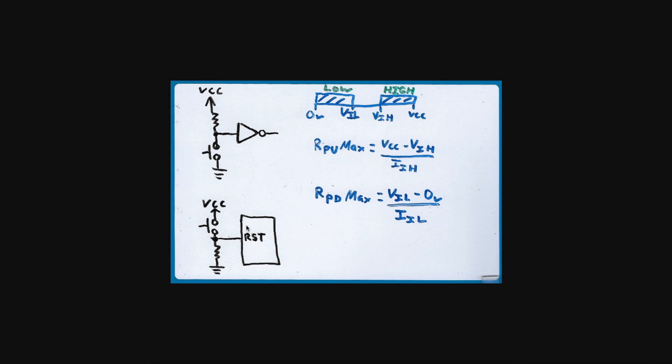So since you need a logic high to reset the chip, you need a pull-down to keep the chip out of reset and running most of the time. Then when you push the button, you present the logic high momentarily and reset the chip.